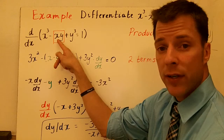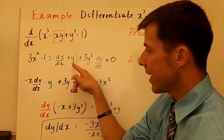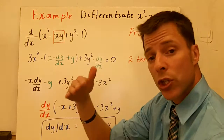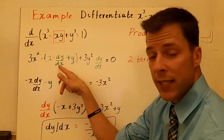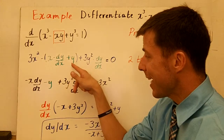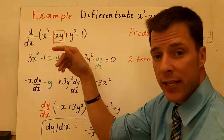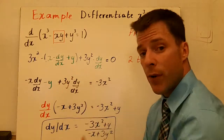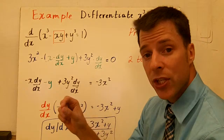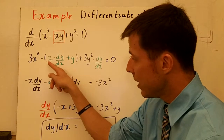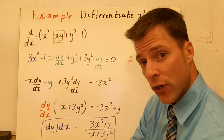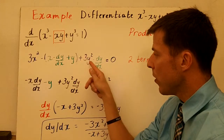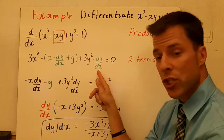First times the derivative of the second plus second times the derivative of the first. So x times the derivative of y is just 1, but since we took the derivative of y, I have to multiply this by dy/dx. Plus second times derivative of the first — the derivative of x is 1, so we're just left with a y here. We didn't take the derivative of this y — remember, first times the derivative of the second plus second times the derivative of the first — so that y is just alone. Plus the derivative of y cubed is 3y squared; I took the derivative of a y term, so there's the multiplication by dy/dx. Derivative of a constant is 0.